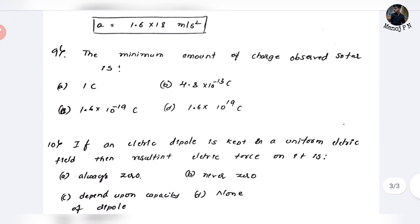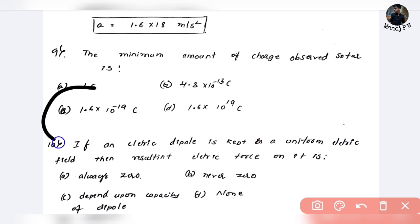The minimum amount of charge observed so far is the charge of the electron: 1.6 times 10 to the power of minus 19 coulombs. This is a common sense question.